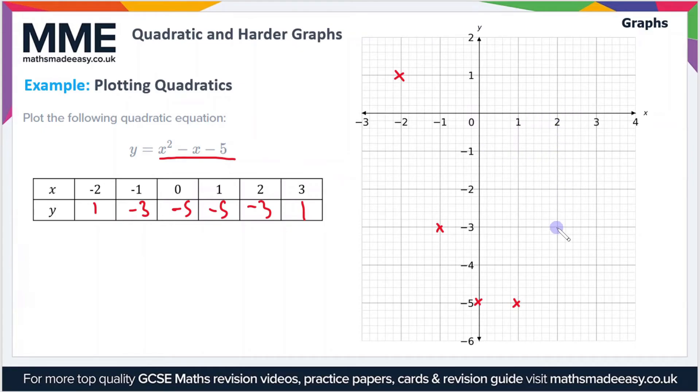And then 2, minus 3, so as you can see the graph is symmetrical, and the last one is 3, 1. And all quadratic graphs are symmetrical, so let's just join these points up now with a smooth curve. So you don't need to use a ruler here or anything, you just do it freehand and try and make it as neat as possible. Go through all the points, and there we go, that's our complete quadratic graph.